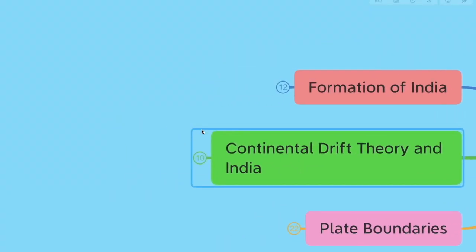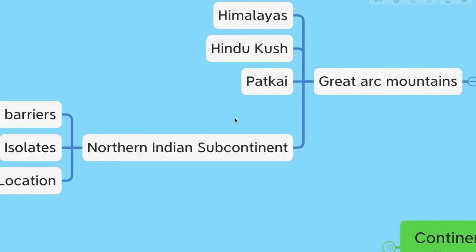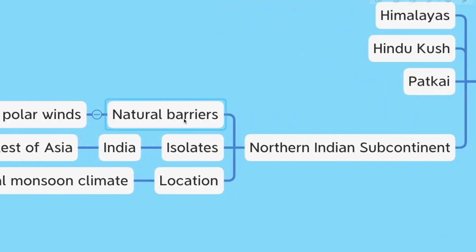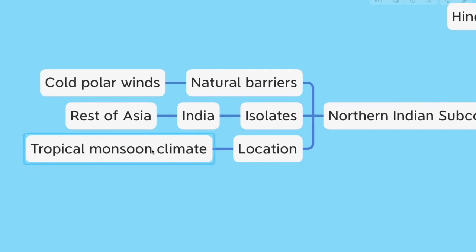The Tethys oceanic crust was in the Asian continent and the plates were welded together to form the high plateau of Tibet and the Himalayan mountains. The great arc of mountains consisting of the Himalayas, Hindukush, and Patkai ranges defines the northern Indian subcontinent. These mountain ranges act as natural barriers to cold polar winds and isolate India from the rest of Asia. Due to India's location, it has developed a tropical monsoon climate.